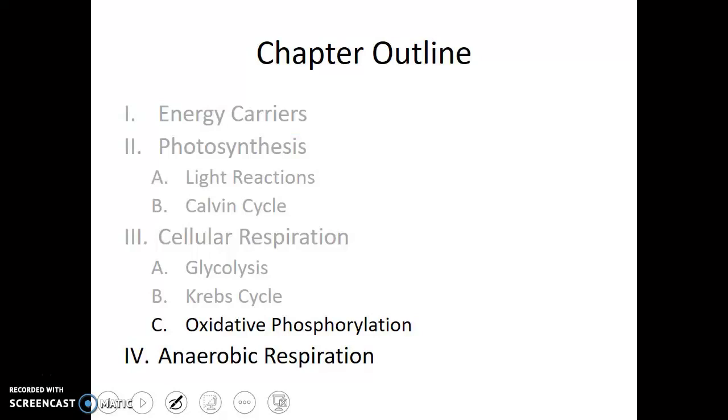So we saw in the first two steps of cellular respiration that we got four ATP and a bunch of these high-energy electron shuttle buses. Let's see how they're used in the final step.